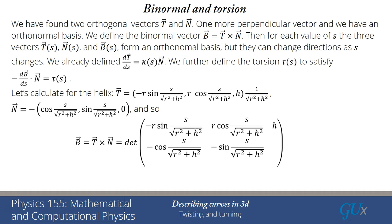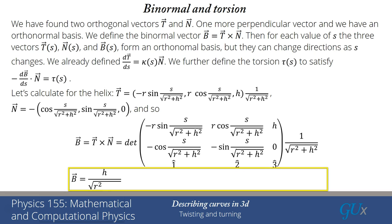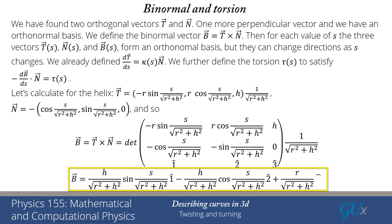To compute the binormal for the helix, set up the determinant with rows T, N, and 1-hat, 2-hat, 3-hat, and calculate. Using sine squared plus cosine squared equals 1, the binormal equals H over square root(R²+H²) times sine(s/sqrt(R²+H²)) in the 1-hat direction, minus H over square root(R²+H²) times cosine(s/sqrt(R²+H²)) in the 2-hat direction, plus R over square root(R²+H²) in the 3-hat direction.